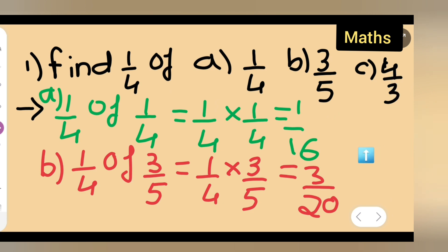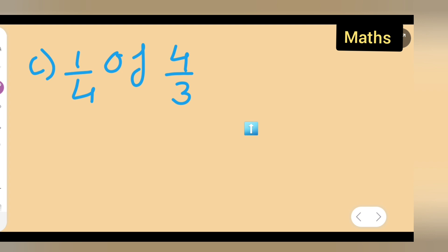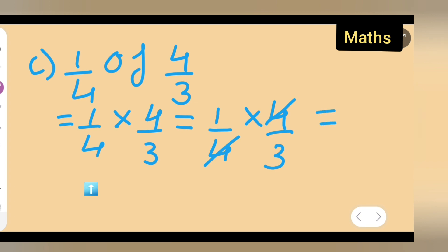Now let us do c) one upon four of four upon three. So c) is one upon four of four upon three. This will be equal to one upon four multiplied by four upon three. Four ones are four, four threes are twelve — but what you can also do is cancel: four and four get cancelled, and what remains is one upon three.